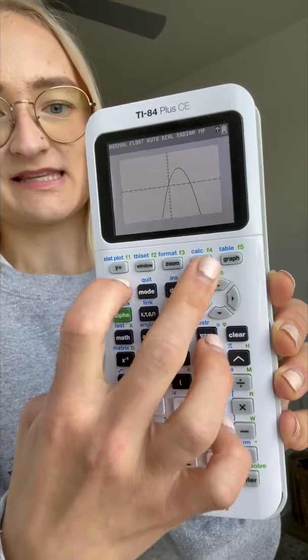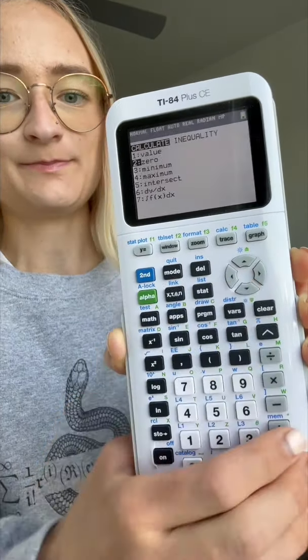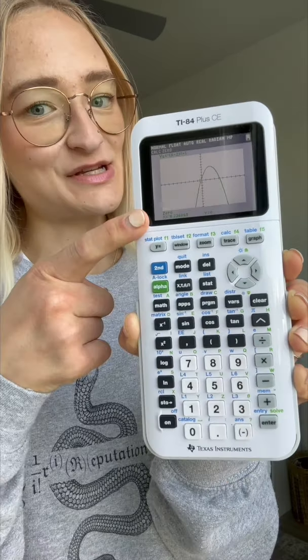Visualizing the graph is helpful for lots of things, but especially finding intercepts. Here we can go second, calc, we're finding a zero. Click to the left, click to the right, enter, and there's our zero.